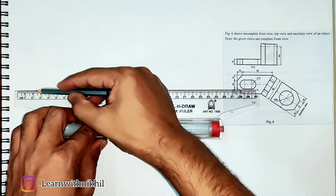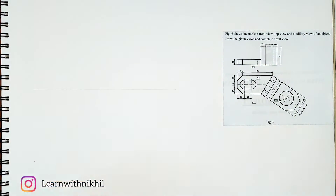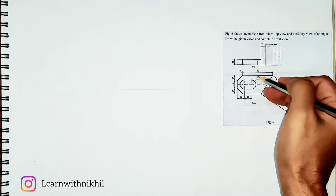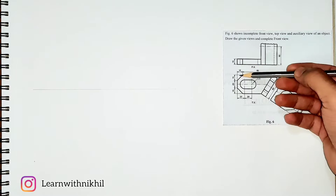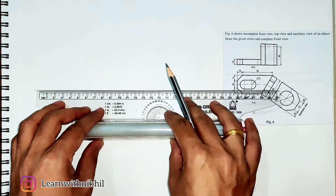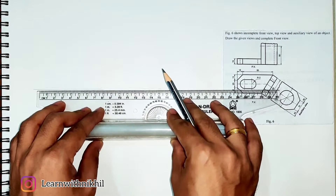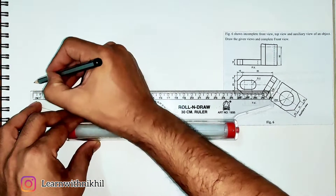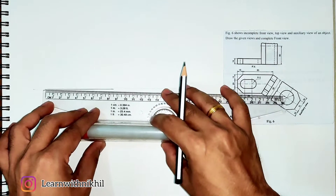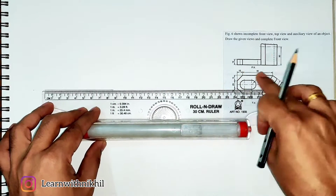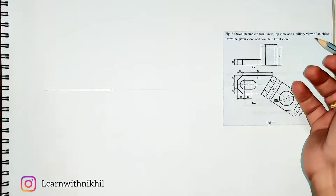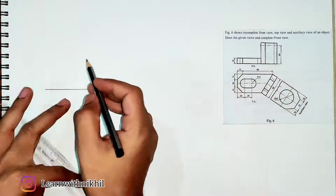First we will draw a straight horizontal line which will separate the top and the front view. The total distance in the top view is 15 plus 85. We are drawing the top view on this line on the bottom side — first leaving a space of 15 millimeters, then drawing a dark line of 85 millimeters. The 15 has a slant line, so we have drawn a line of 85 millimeters dark and marked a point at 15 millimeters.